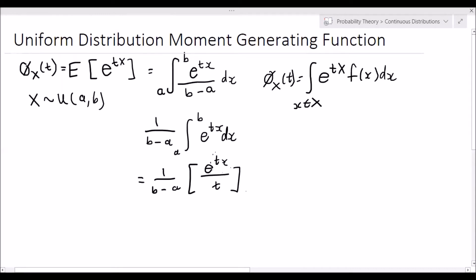We solve this from the limits of a to b. So this becomes 1 over t times b minus a, and this becomes e to the bt minus e to the at.